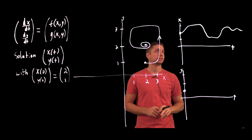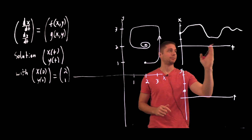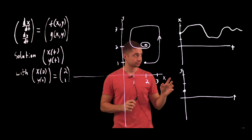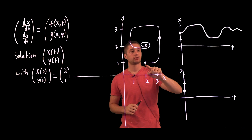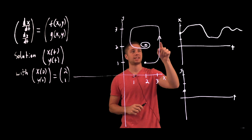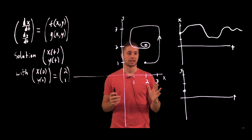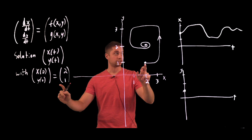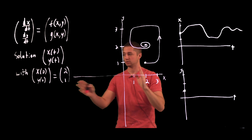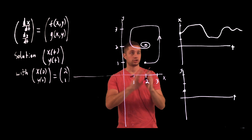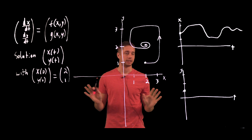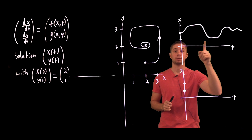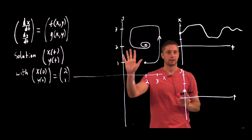One thing to notice is that I couldn't tell you exactly what time any of these events occurred. If you're just looking at a solution curve in the phase plane, you can't tell any time information. You know that the solution will go this way as time increases, but I can't tell you exactly when the solution is at a certain point without some additional information. We could tell where we were at t equals 0 because we were told that, but just by looking at this picture, there's no time information — there's an x-axis and a y-axis, but no t.